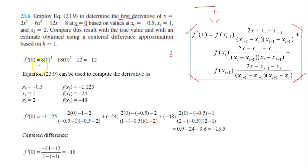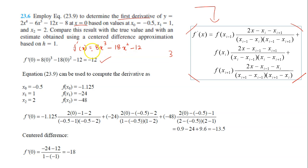Looking at the solution, we solve this using analytical differentiation. So f'(x) equals 8x³ minus 18x² minus 12. To find the answer when x equals 0, just substitute 0 into this first derivative. You get f'(0) equals negative 12, because the other terms go to 0. This will be the actual or true value of the problem.